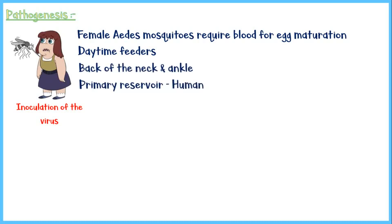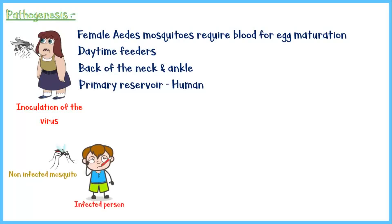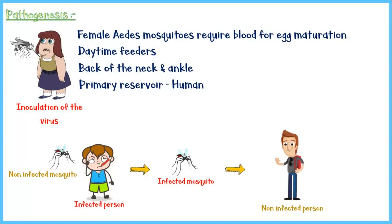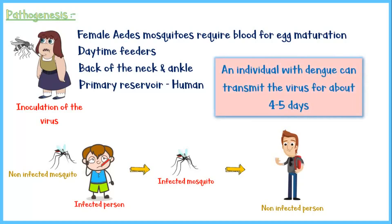The primary reservoir of the virus is human. When an infected person is bitten by a non-infected Aedes mosquito, the virus is transmitted into the mosquito and it becomes infected. When this mosquito bites another non-infected person, that person also becomes infected — this is the main method of viral transmission. Hospitalized patients are advised to stay within bed nets, as an individual with dengue infection can transmit the disease for about 4 to 5 days.